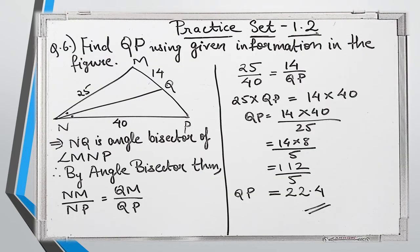This is question number 6. Let me choose the pointer. Let's read the question: Find QP using the given information in the figure. There is a triangle and they have given the length of a few segments, and we have to find the length of QP.